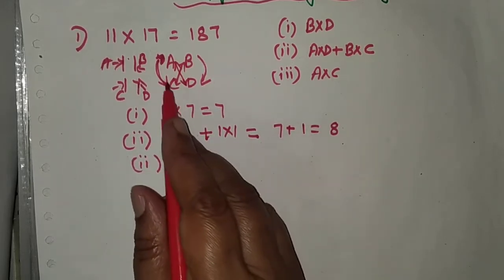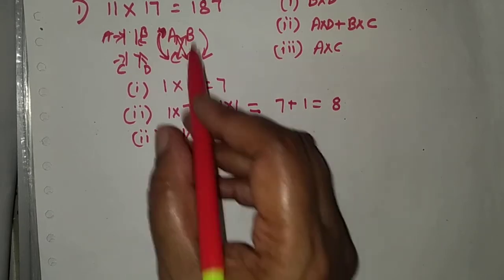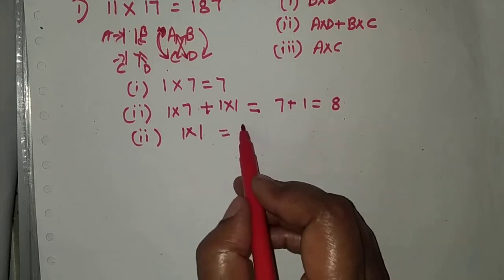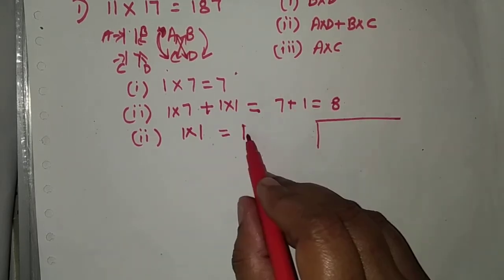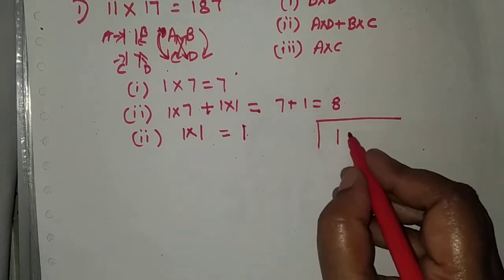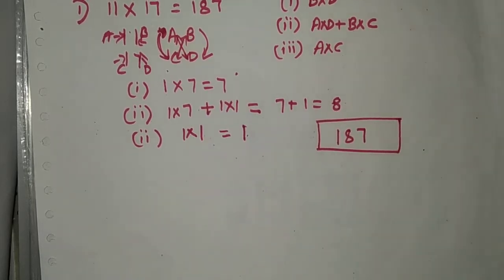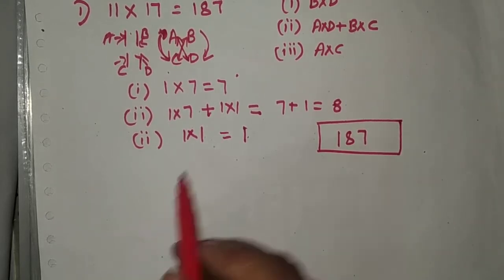Third step is A into C: 1 into 1 equals 1. Writing the results in order — 1, 8, 7 — gives us the answer: 11 into 17 equals 187. This is the method where we follow three steps.